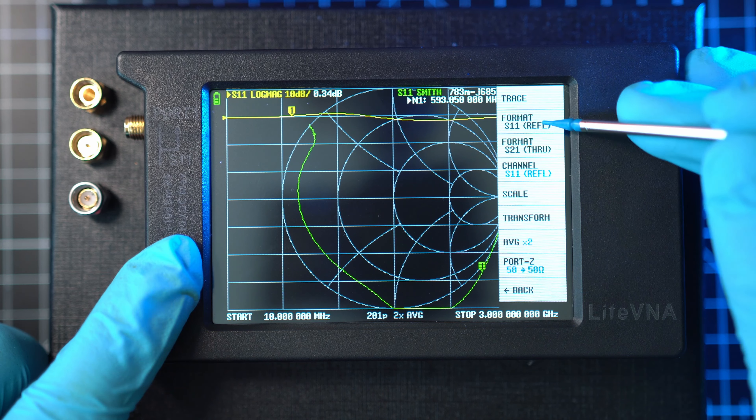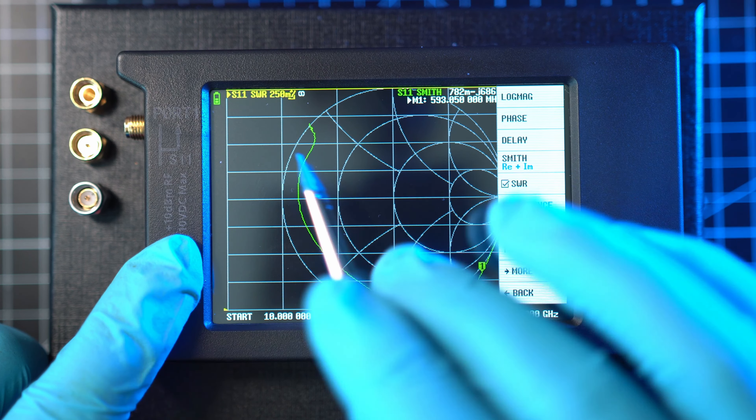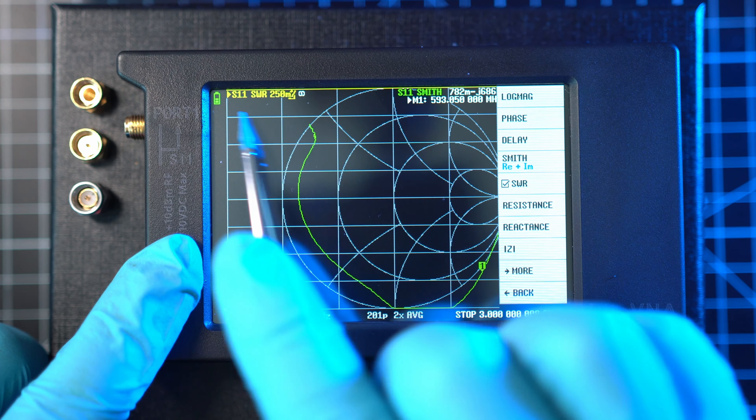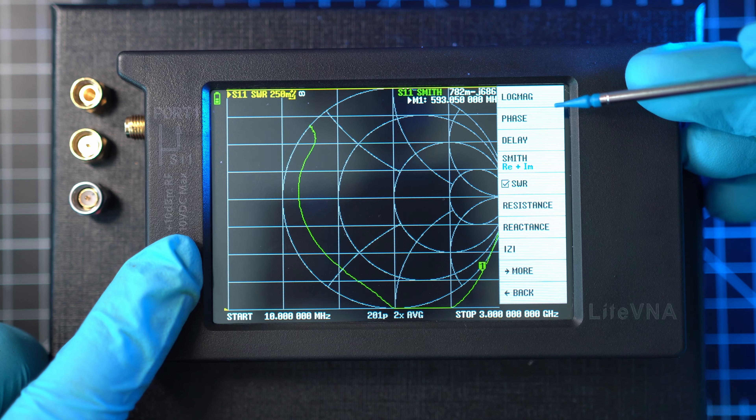Go back. Hit format S11 and enable SWR. This will change log mag to SWR. And now we have SWR on left side and Smith chart on right side.